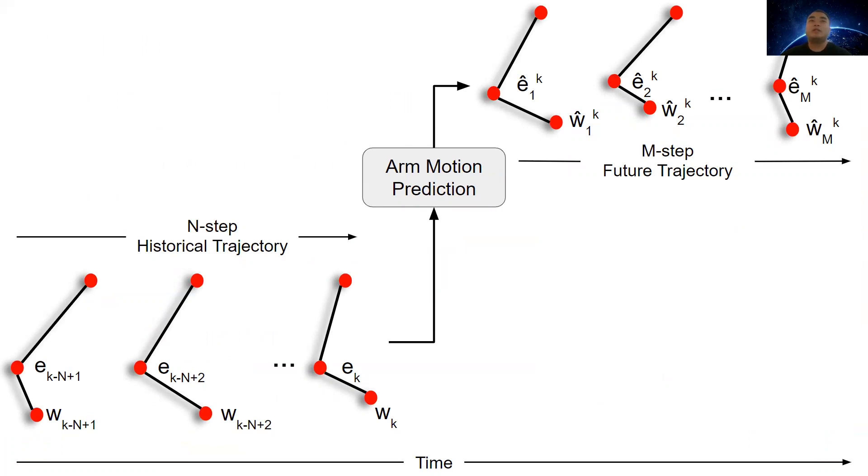The problem can be visualized in this figure. Given the N-step arm motion observation, we want to design a predictor that uses the observation to give the future M-step arm trajectory.